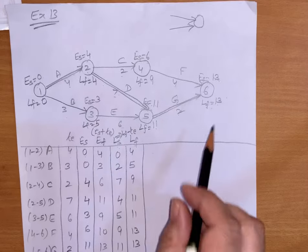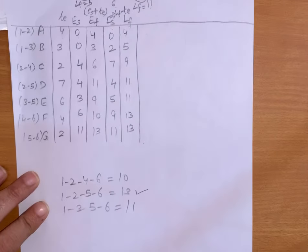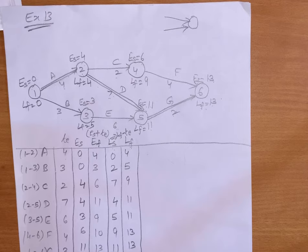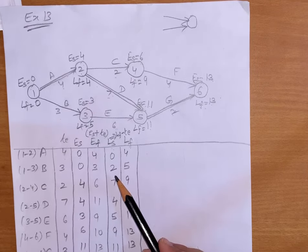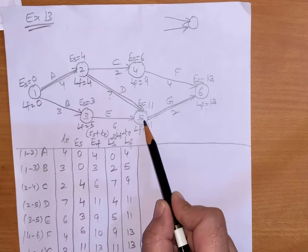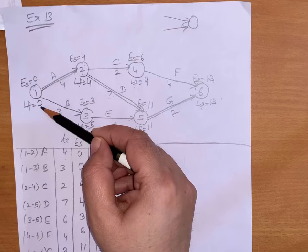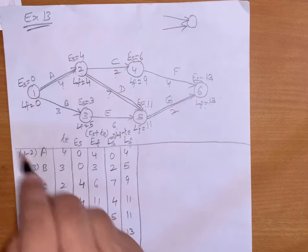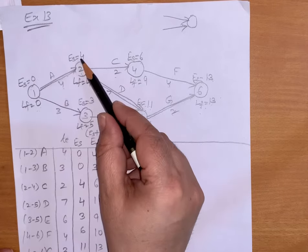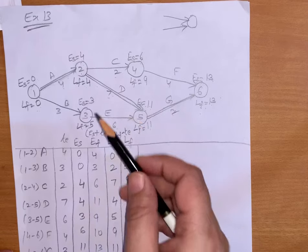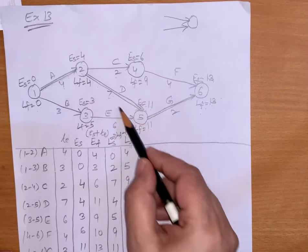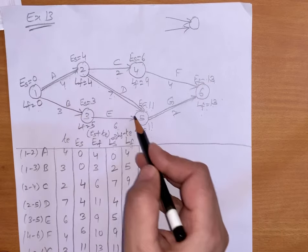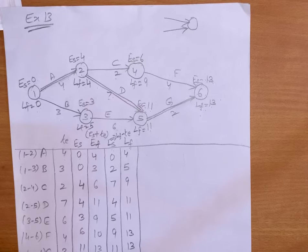Yesterday I told you how to find the critical path by drawing all paths and finding the longest one. Now having calculated earliest start, latest start, and latest finish, just see: for all activities on the critical path — 1, 2, 5, and 6 — earliest start and latest finish are equal to each other: 4 equals 4, 11 equals 11, 13 equals 13. So we can identify the critical path by this method also. These are equal, so they will be on the critical path. For critical activities, earliest start and latest finish are equal to each other.